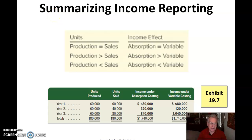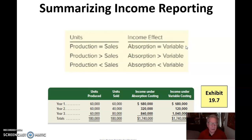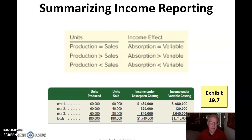Welcome back to video number two in chapter 19. When we left off, we were looking at summarizing income reporting under both absorption costing and variable costing. Absorption costing will have the same income effect if we produce what we sell. But if we produce more than what we sell, absorption costing is going to have greater income reported than variable costing, because those units that we did not sell are sitting in inventory and have not yet been expensed.